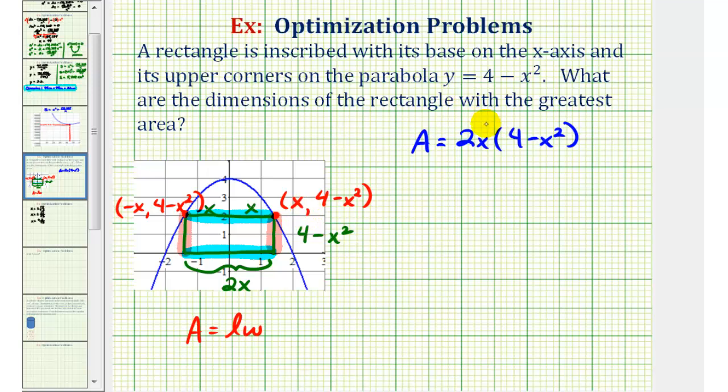So for the next step we'll go ahead and clear the parentheses. So we'd have A equals, this would be 8x minus 2x to the third.